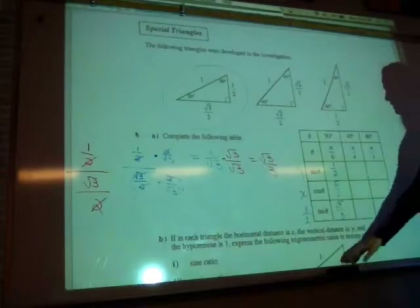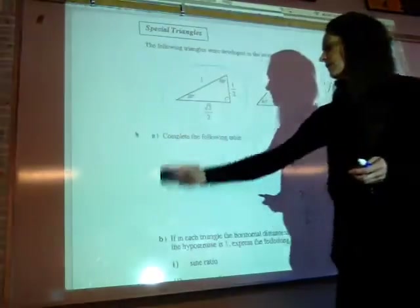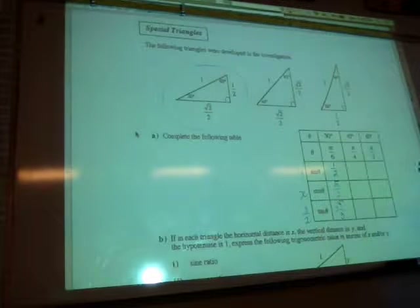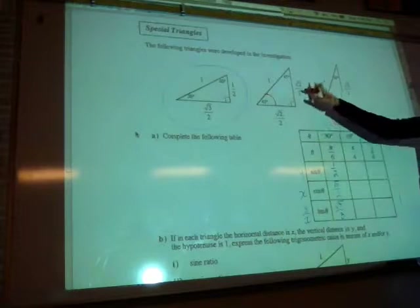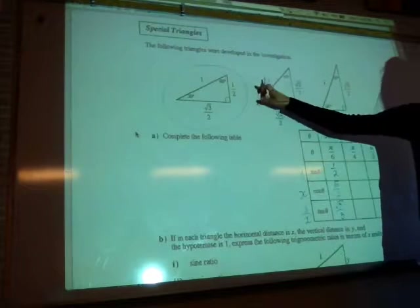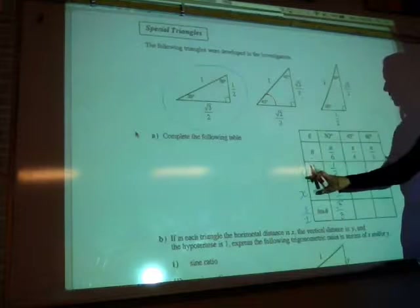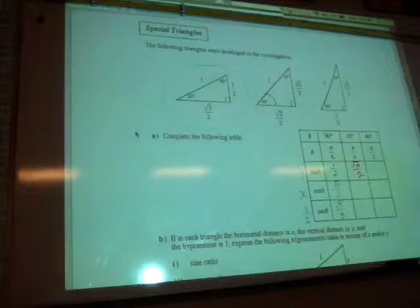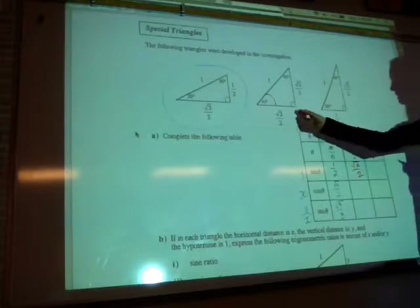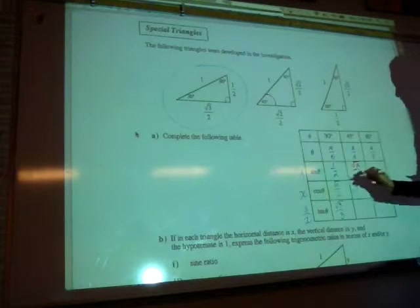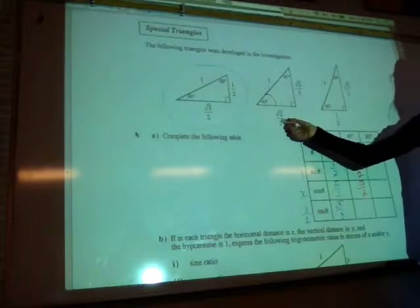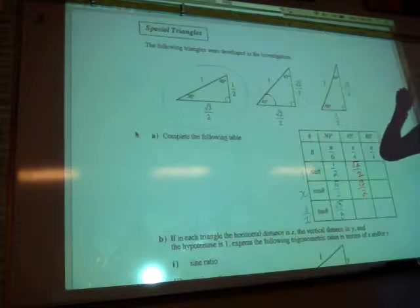Let's move on to 45 degrees. First we'll figure out sine 45 degrees. Sine is opposite over hypotenuse, but my hypotenuse is 1, so I don't worry about it — it's just the y value. So I have root 2 over 2. And cosine 45 degrees? It's the x-coordinate, root 2 over 2. Tangent is opposite over adjacent — root 2 over 2 divided by itself is 1.